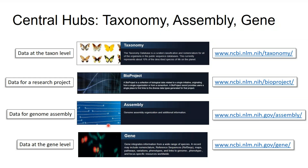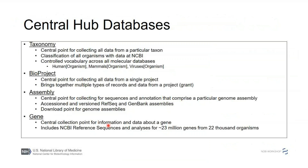Coming to NCBI can be a little overwhelming. There are some central hubs that are good places to start: the Taxonomy database, the BioProject database, the Assembly database, and the Gene database. Taxonomy is very important at NCBI — it's the main controlled vocabulary across all our molecular databases, allowing organism-fielded searches for any taxon from species level all the way up to a super kingdom.